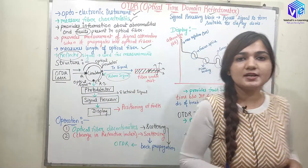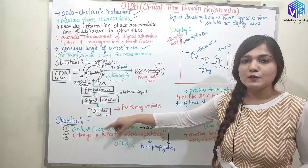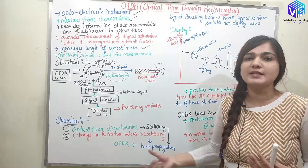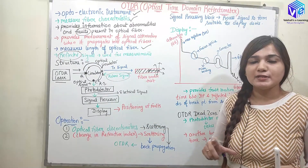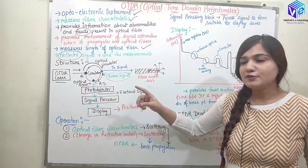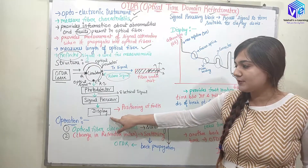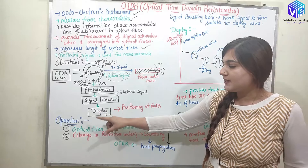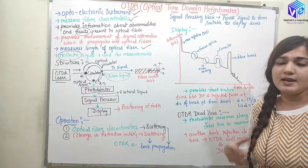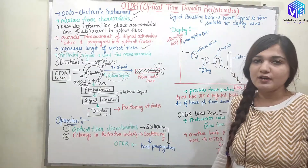The signal processor makes the signal compatible with the display device by processing it into the configuration the display device requires. The display device then shows the reflected signal, and from that reflected signal we can determine the positioning of the fault.